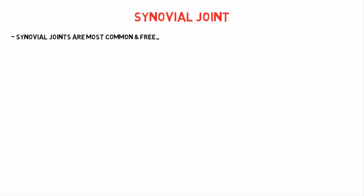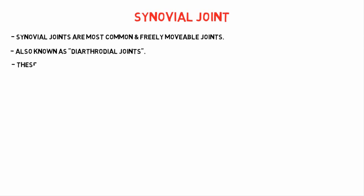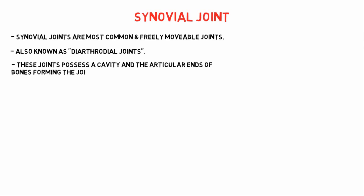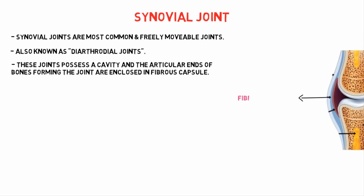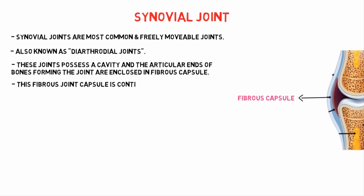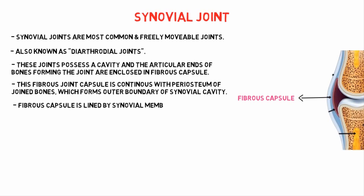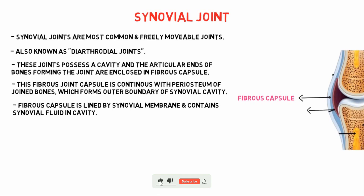So what is a synovial joint? Synovial joints are the most common and freely movable joints, which are also known as diarthroidal joints. These joints possess a cavity, and the articular ends of bones forming the joint are enclosed in a fibrous capsule. This fibrous joint capsule is continuous with the periosteum of the joint bone, which forms the outer boundary of the synovial cavity. The fibrous capsule is lined by synovial membrane and contains synovial fluid in the cavity.